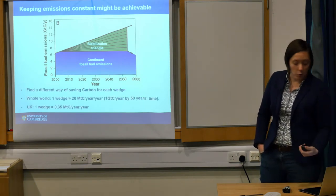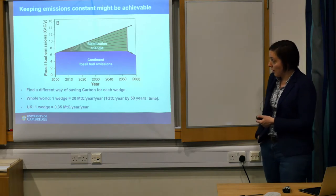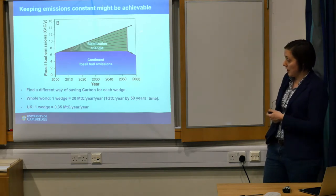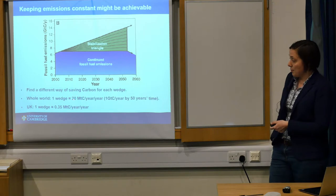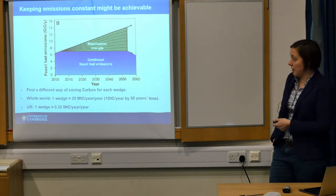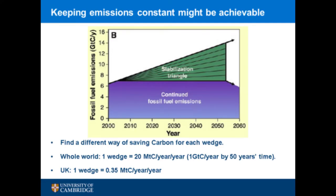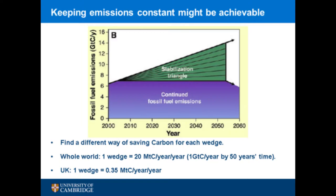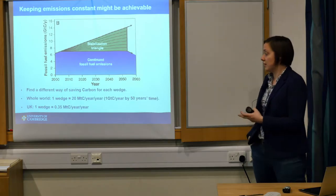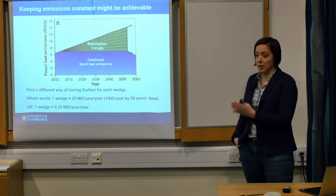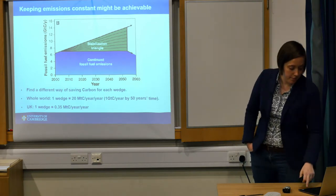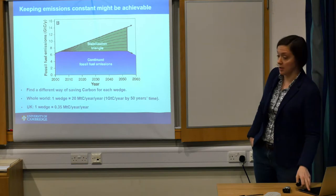One wedge for the whole world, in order to keep going up here, is 20 megatons of carbon per year per year. So each of these is one gigaton of carbon a year in 50 years' time. If you roughly work out the UK's emissions, that's about 0.35 megatons. So for each of these wedges, you need to save 0.35 megatons of carbon per year per year, and then you can keep your emissions constant over 50 years.